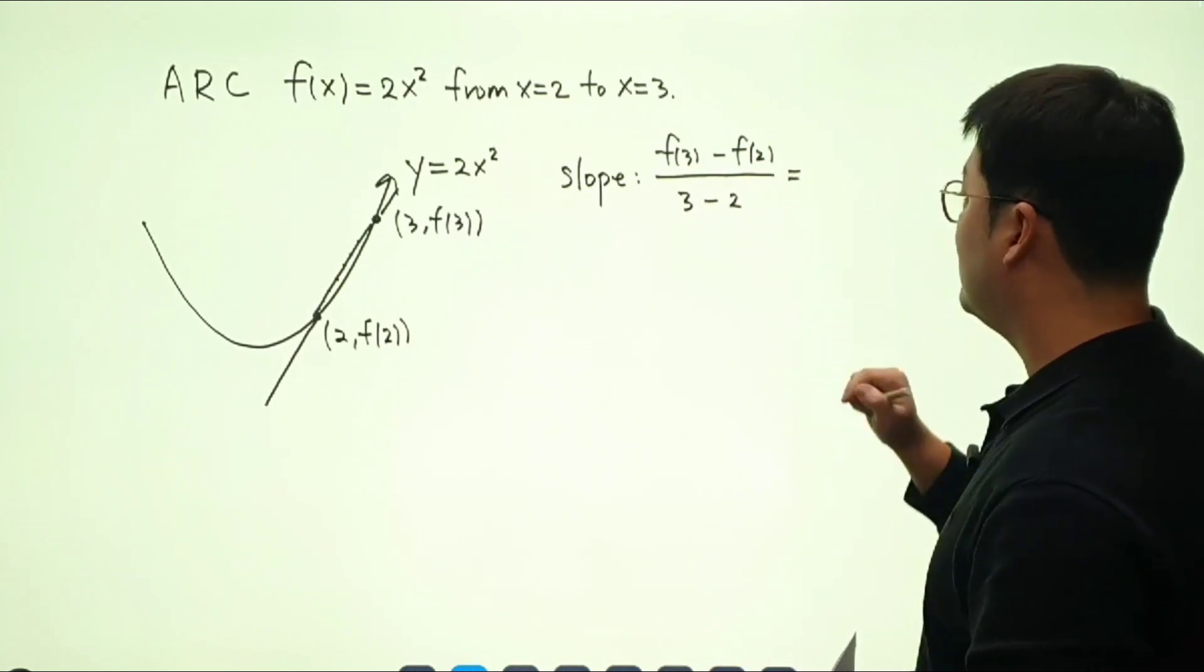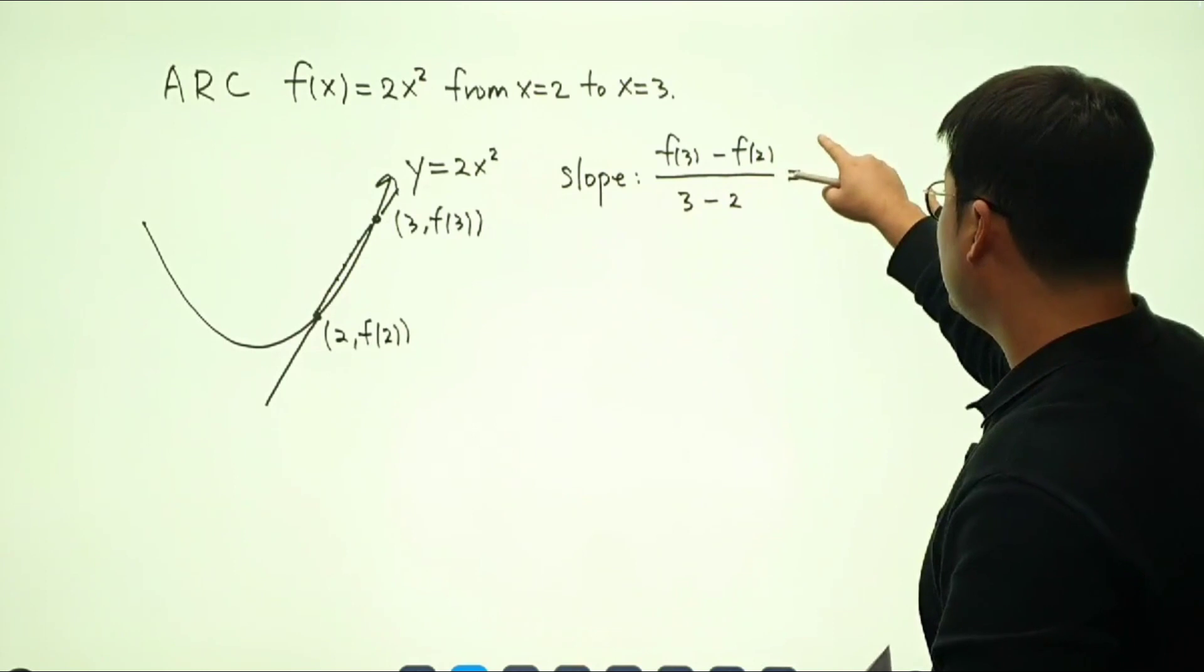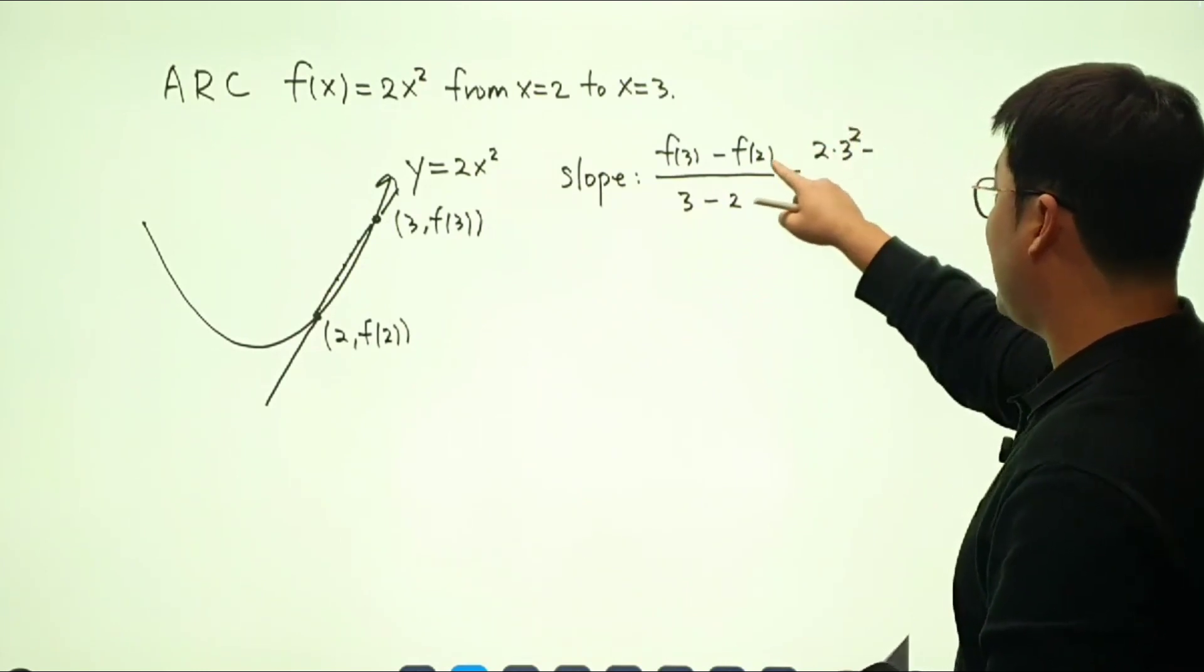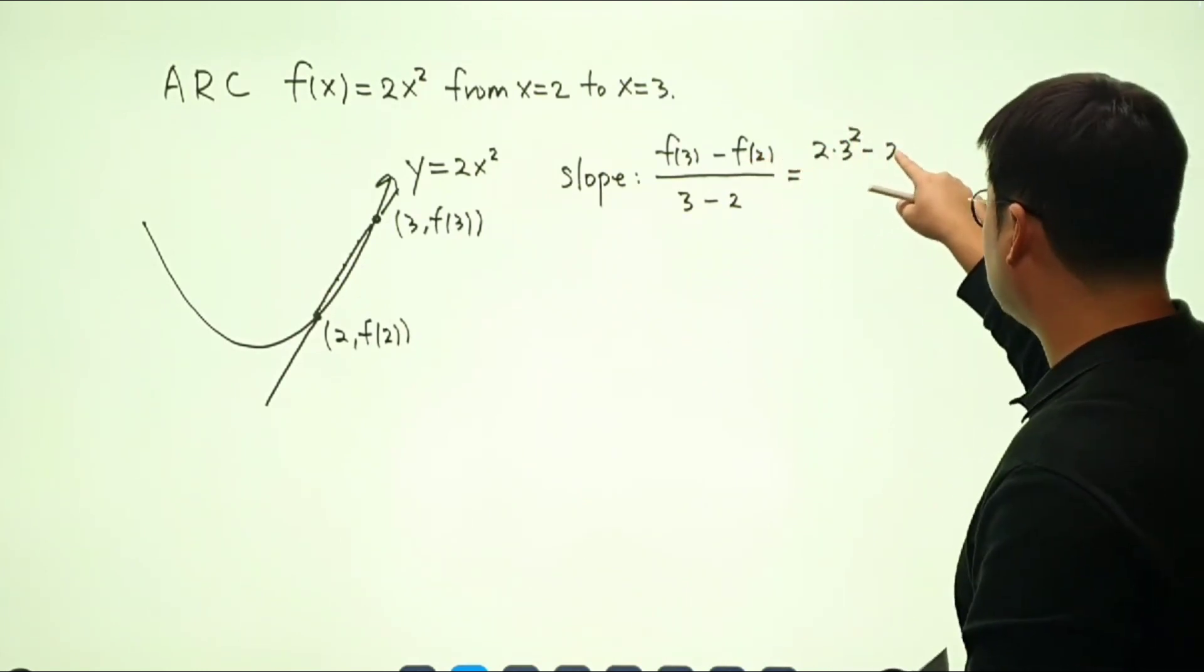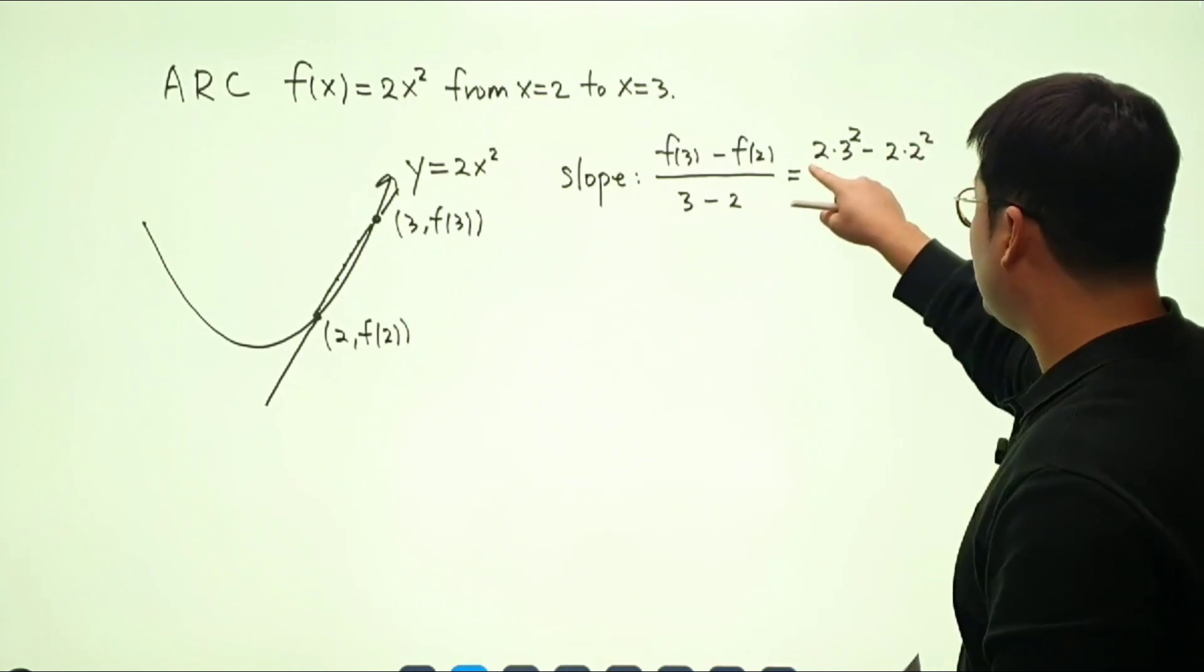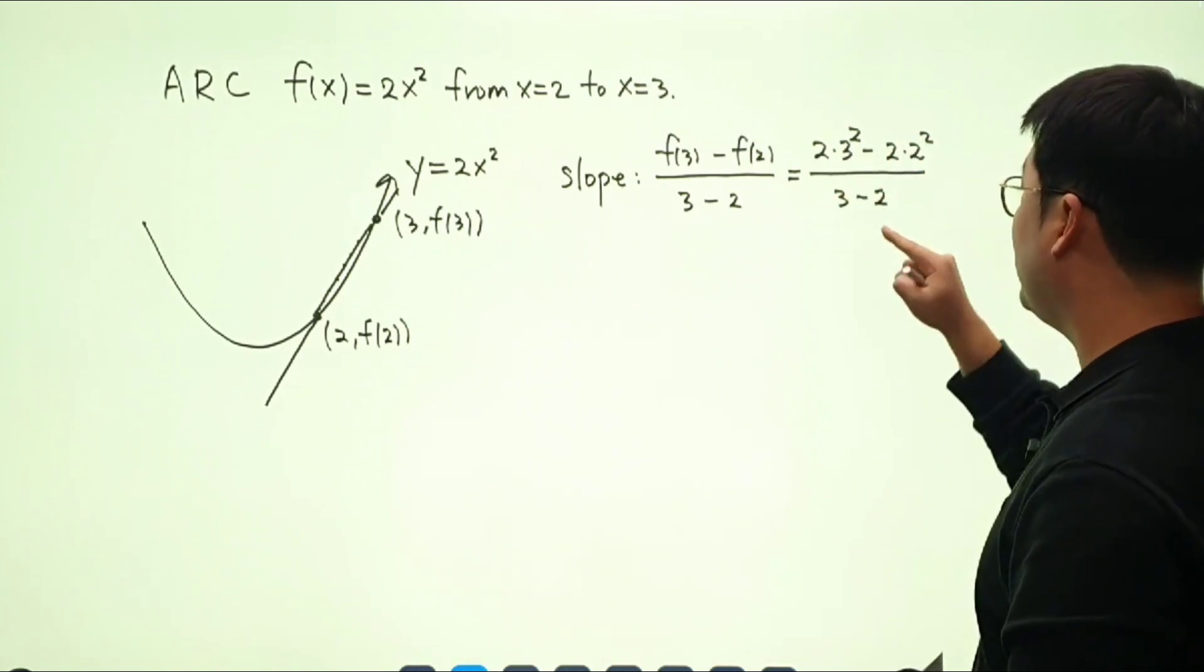So what is this? What's f of 3? It's going to be 2 times 3 squared. And what's f of 2? You can check that that's going to be 2 times 2 squared. And we divide it by 3 minus 2, which is just 1.